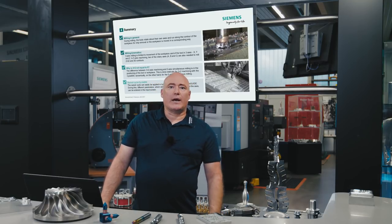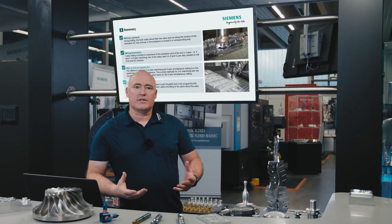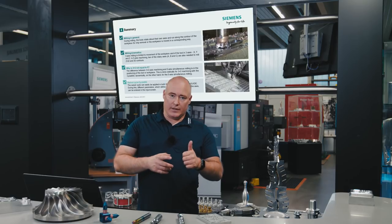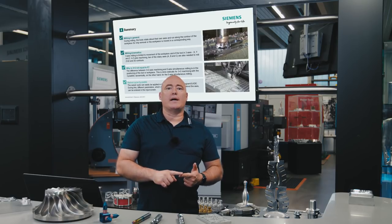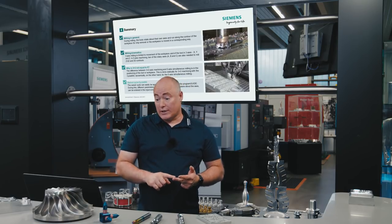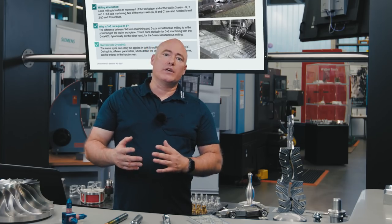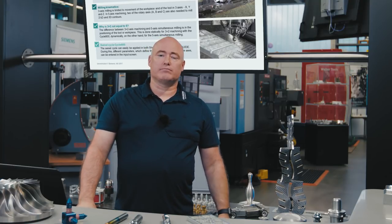Let's sum up. During milling, the material is removed by the tool rotating around its own axis. This is done in 3-axis, 3-plus-2-axis, or in 5-axis simultaneous mode. The difference lies in the orientation of the tool, which is either static with 3-plus-2 or dynamic in 5-axis simultaneous mode. And using Cycle 800 considerably simplifies the programming. Thank you for watching. See you soon.